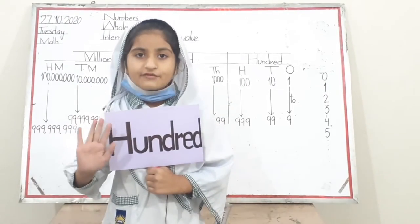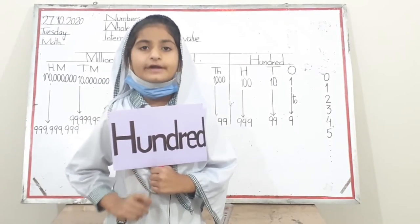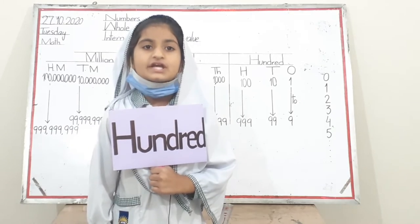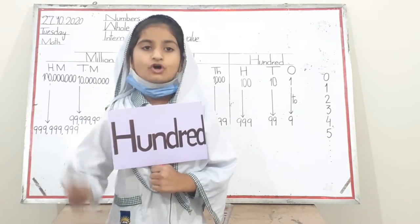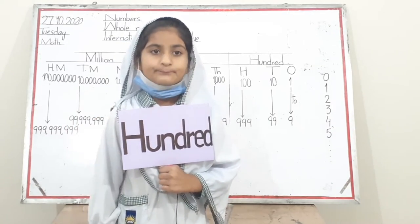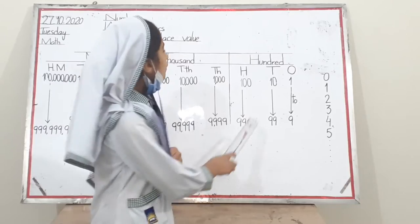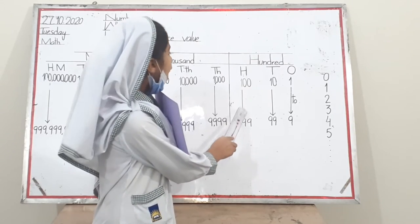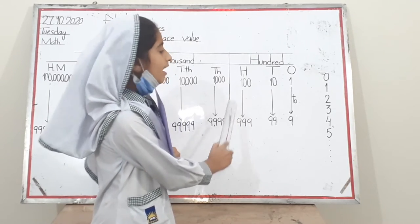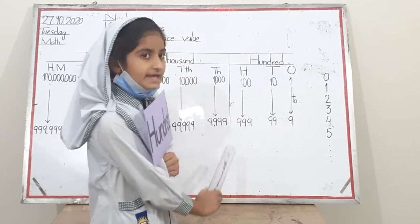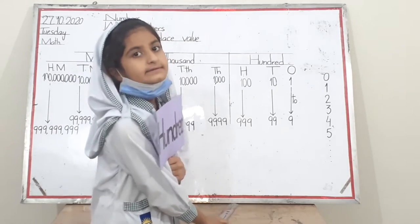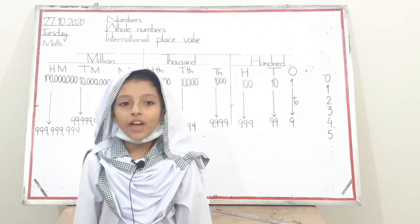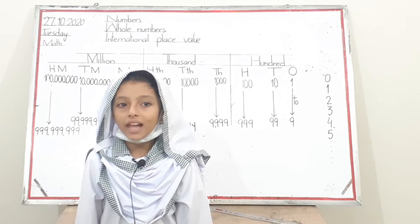Hi friends, I am hundreds, a member of the hundred family. I show three digits, for example one hundred to nine hundred and ninety-nine. One hundred is my smallest number and nine hundred and ninety-nine is my biggest number. Thanks. Now the thousand family comes to introduce itself.